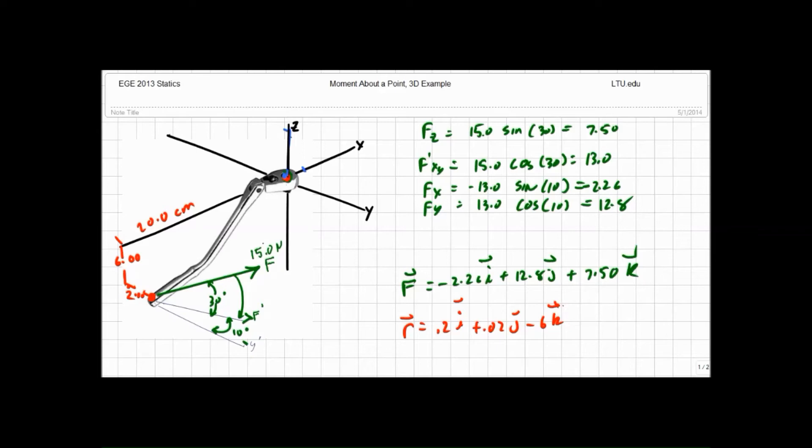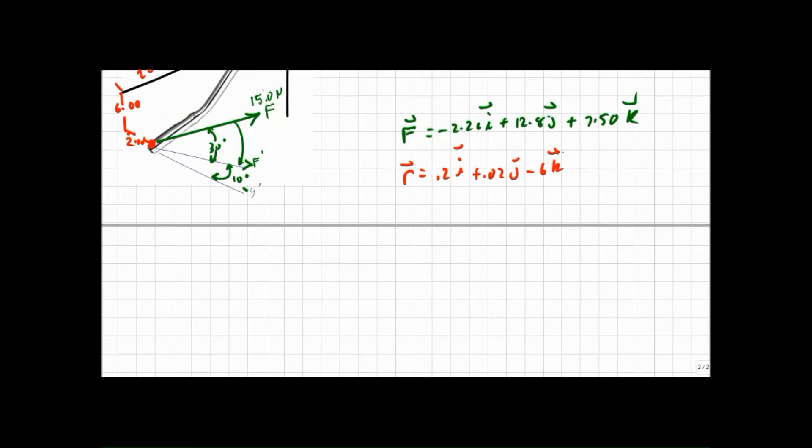So now I have my F and my r in the appropriate format. I can calculate my moment. M zero equals r cross F and we have to do it in that order, and we can calculate that by evaluating the determinant.